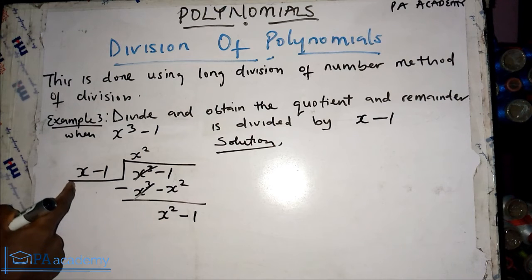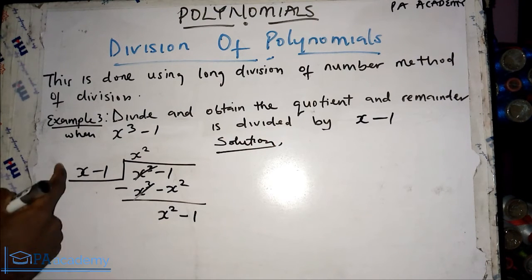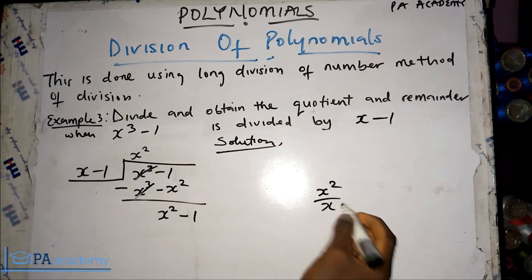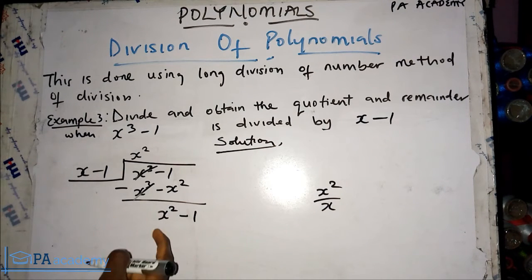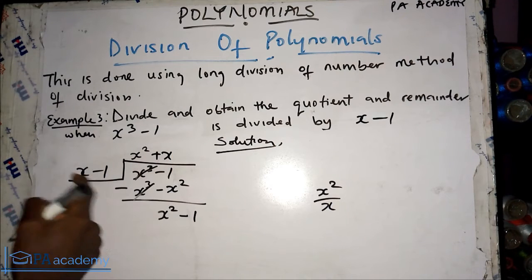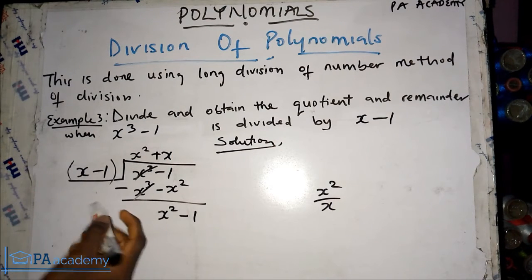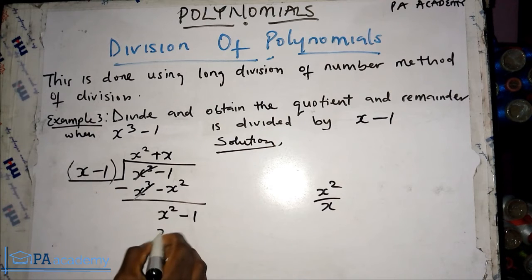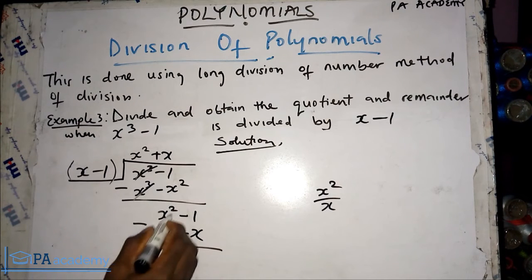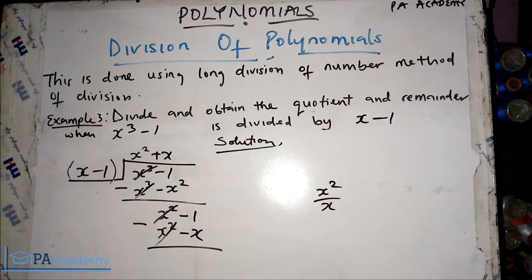Now we can divide x² by x, which gives us x. So we add plus x to the quotient. We use x to multiply the divisor: x multiplied by x gives x², and x multiplied by minus 1 gives minus x. Now let's subtract — x² minus x² cancels to zero.